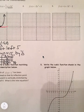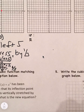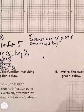For number 2, we have negative 2x cubed plus 3. The negative 2 means the graph reflects across the x-axis and is stretched by a factor of 2. The plus 3 means it shifts up 3.